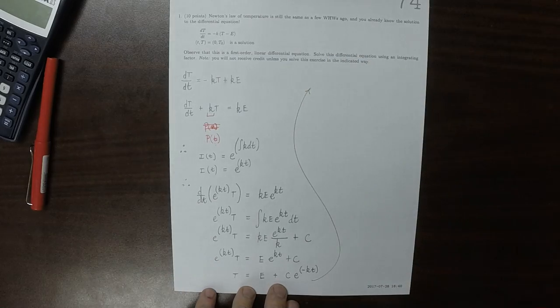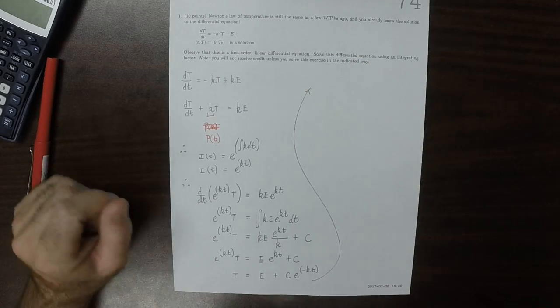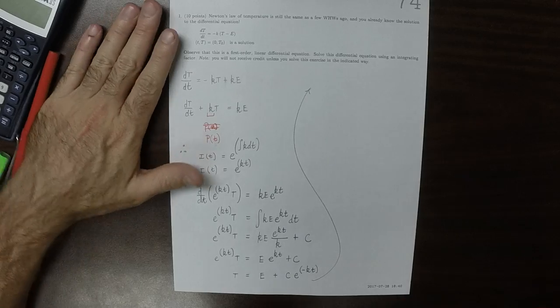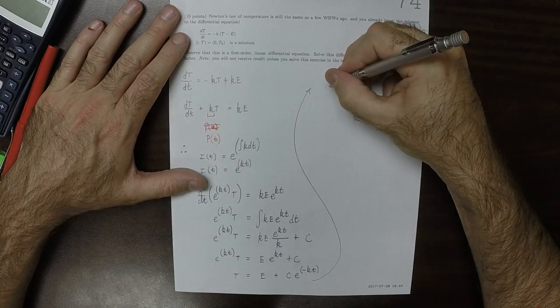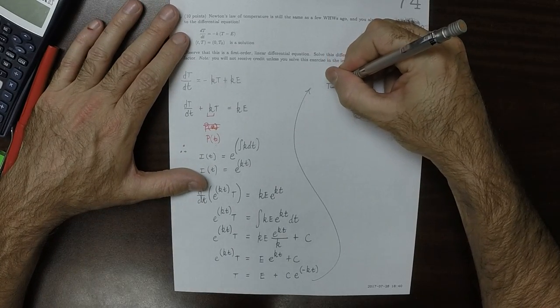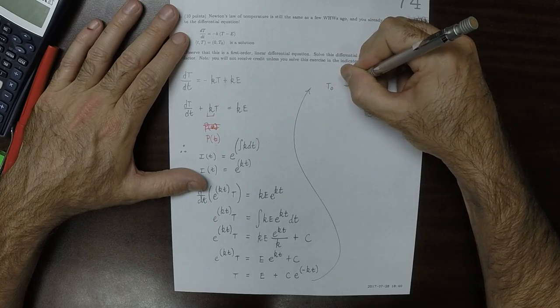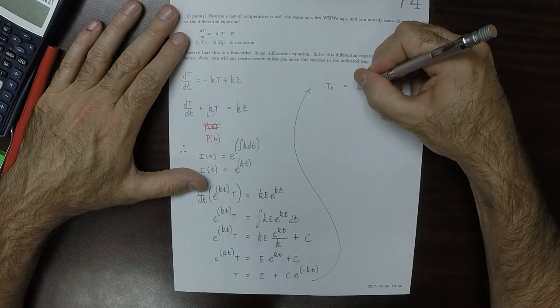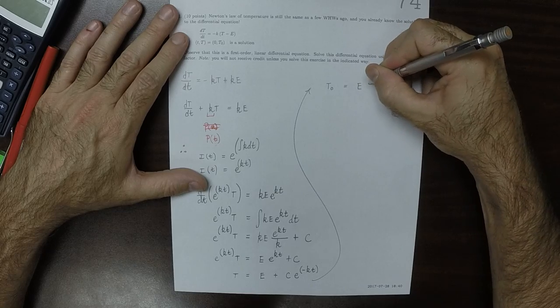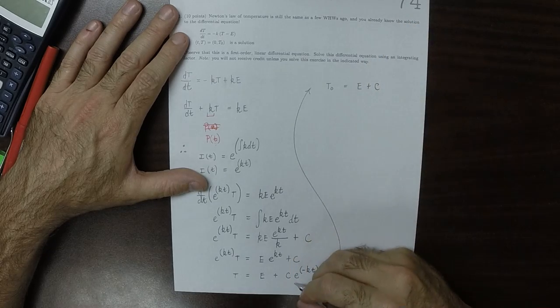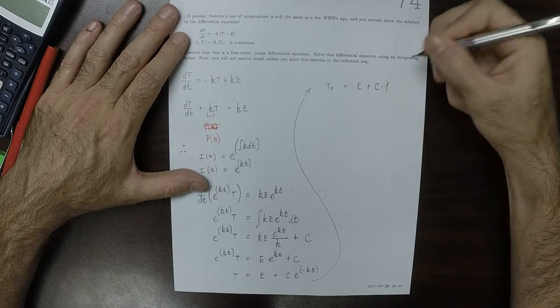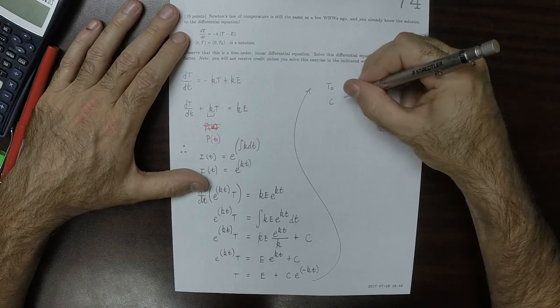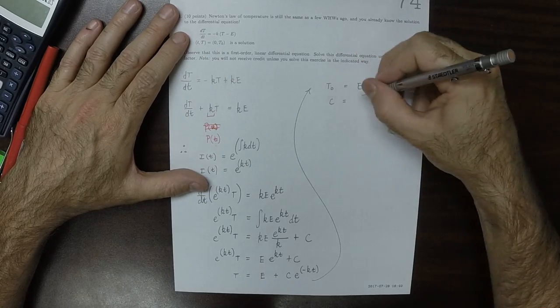So to determine the value of C we can use the initial data, and that initial data tells us that T zero, the initial temperature, should be E and then plus C multiplied by one, so C is T zero minus E.